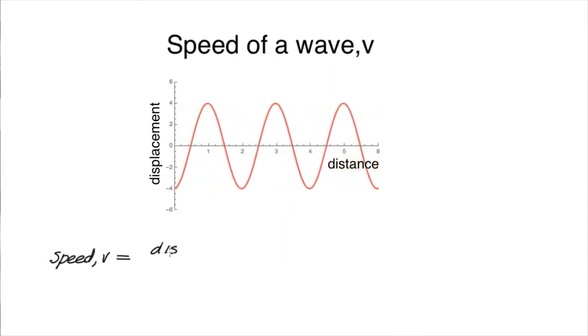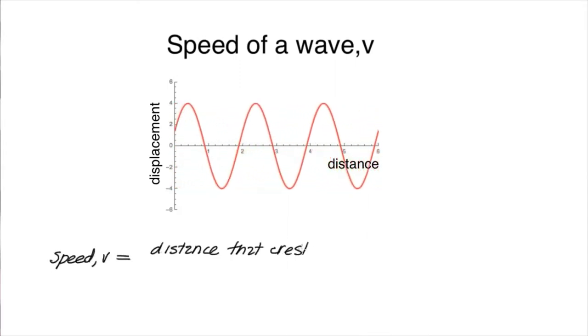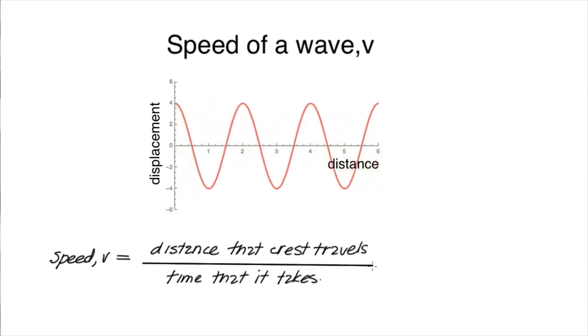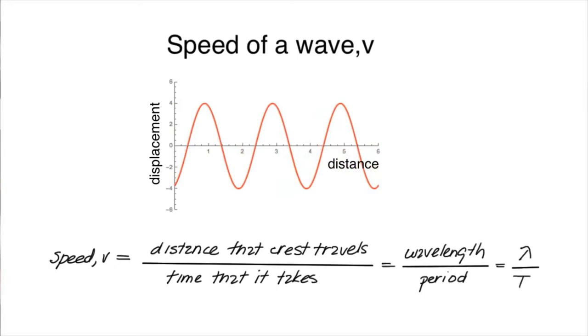The speed is the distance that a crest travels divided by the time that it takes to travel that distance. Now we already have that from the graphs. Remember that the period is the time that it takes for the crest to travel its wavelength, or the speed is the wavelength divided by the period.